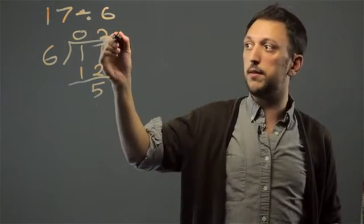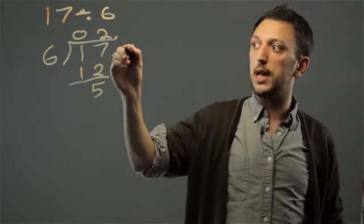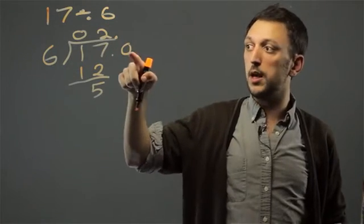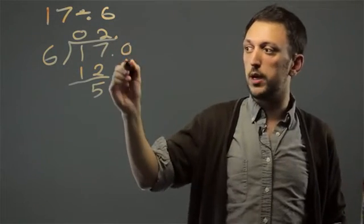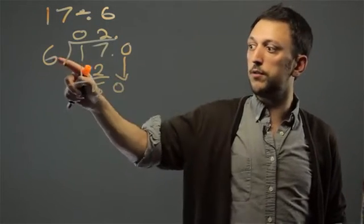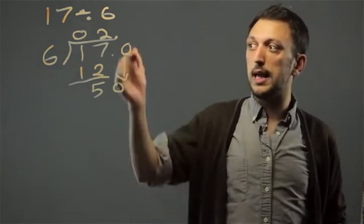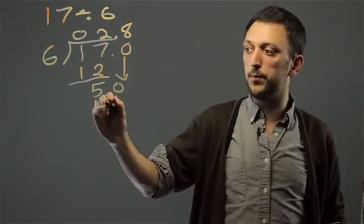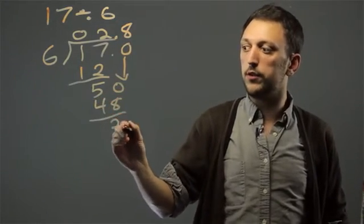Now, 6 doesn't go into 5, so now we have to create decimal places. And we create a fictional 0, which we can bring down, so this is now 50. 6 goes into 50 8 times, because of 48. And we get a 2.